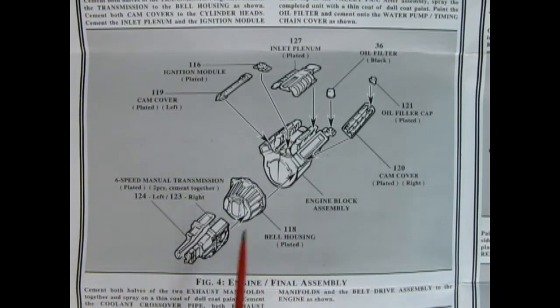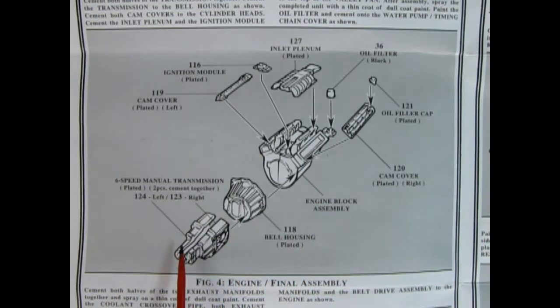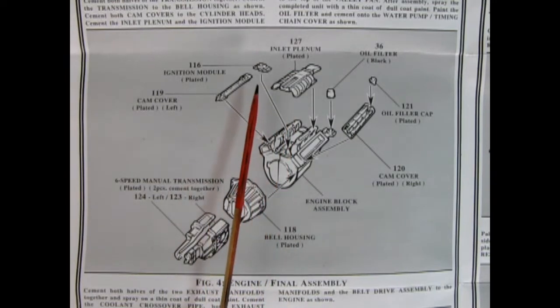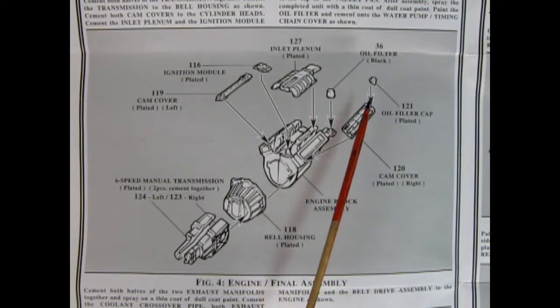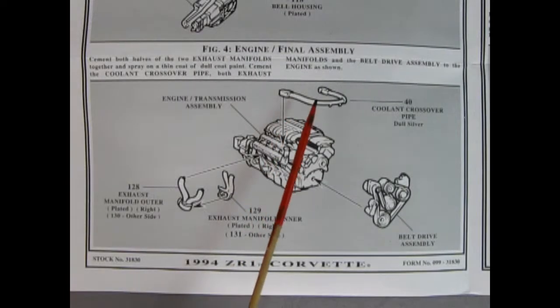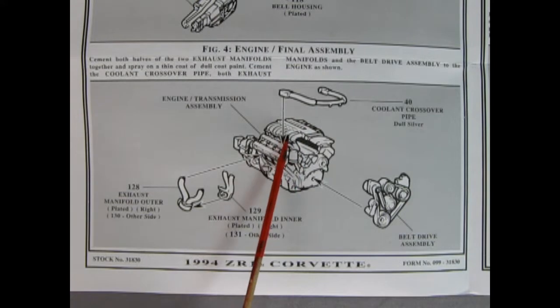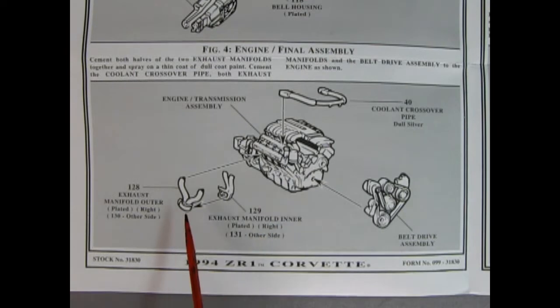We carry on our engine build by putting on the bell housing and our left and right hand six speed transmission, and that all glues together to our block. Then we've got our cam cover going on as well as the ignition module, the inlet plenum and our oil filter and oil filler cap. And here we see our coolant crossover pipe being glued in place, and then the entire belt drive assembly goes on the front of the engine. And we've got our two-piece left and right hand side exhaust manifolds which glue on there, and you got to build another one for the other side.